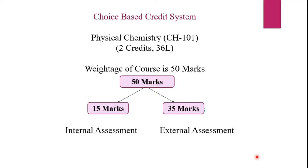From the last academic year, the UGC and the university have jointly launched the CBCS pattern, that means Choice Based Credit System. Apart from the prescribed syllabus, you will have to participate in various extracurricular activities and earn more and more points.